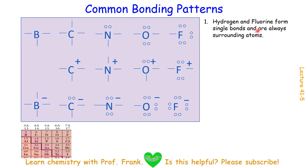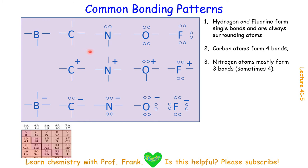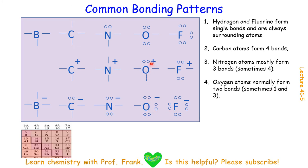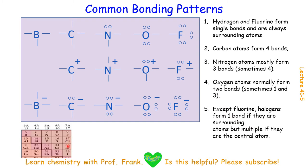Please note that hydrogen and fluorine form single bonds and are always surrounding atoms. Carbon forms four bonds. Nitrogen mostly forms three bonds, sometimes four — if nitrogen loses one electron. Oxygen normally forms two bonds, but if oxygen gains one electron, only one single bond can be formed; if oxygen loses one electron, three bonds can be formed. For halogens except fluorine, if they are surrounding atoms they form a single bond, but if they are central atoms, multiple bonds can be formed.